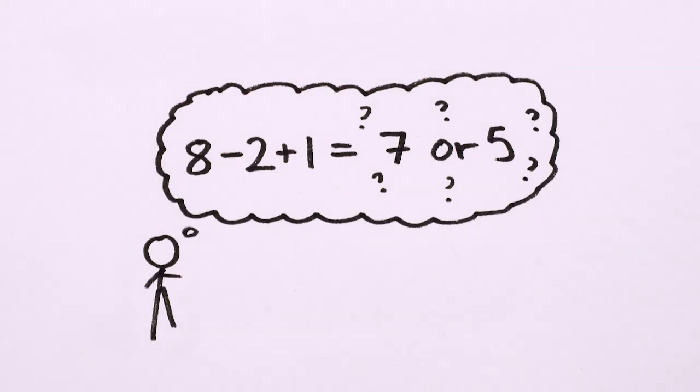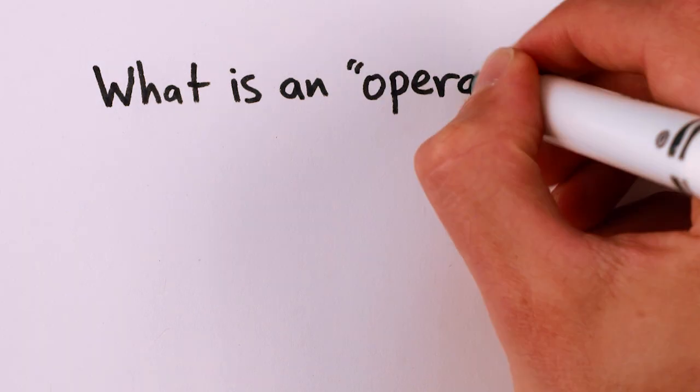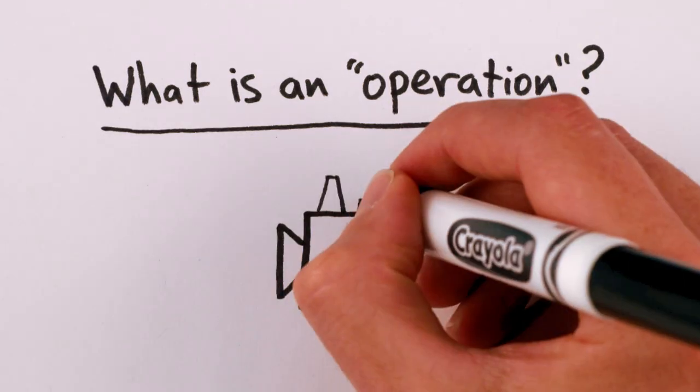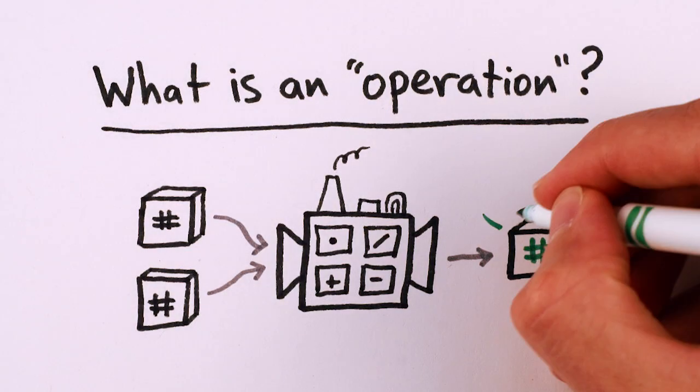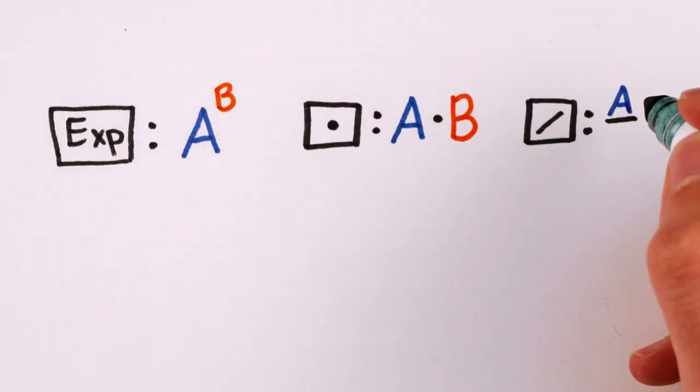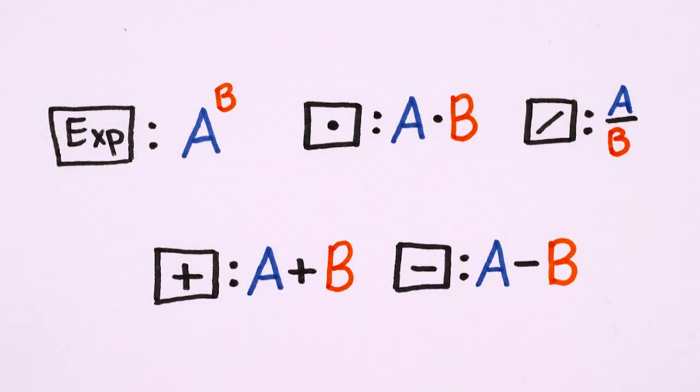But why is this ambiguity even possible? It's because, fundamentally, all of these operations are simply different procedures that start with two numbers and combine them in some way to give you one number. Each operation takes two numbers as input, two and no more.